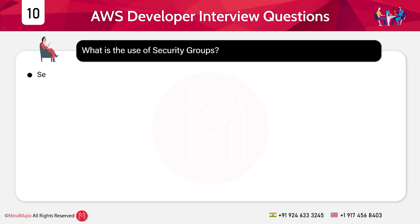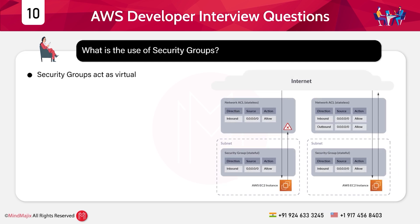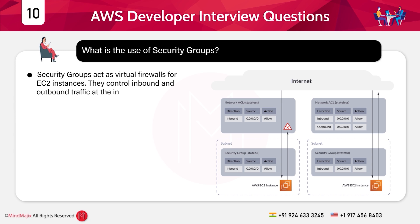Question 10: What is the use of security groups? Answer: Security groups act as virtual firewalls for EC2 instances. They control inbound and outbound traffic at the instance level using allow-only rules to define accessible ports and IPs. Now we will move to the intermediate level of interview questions and answers.